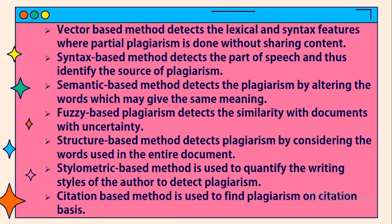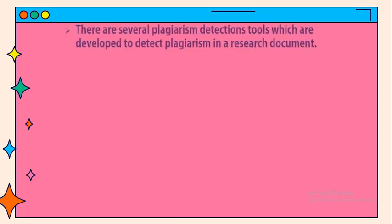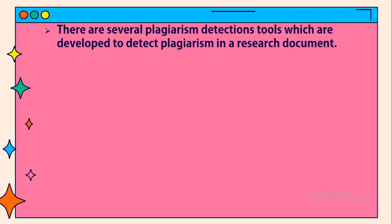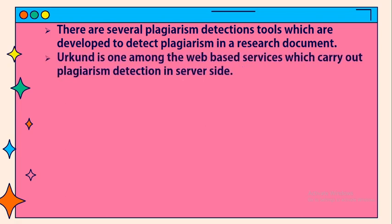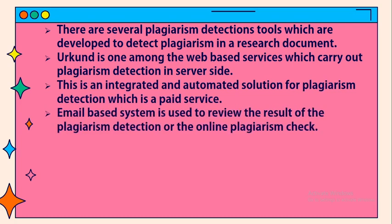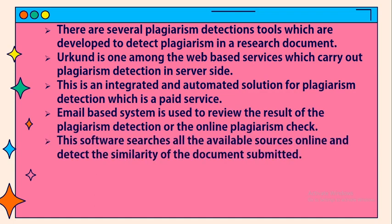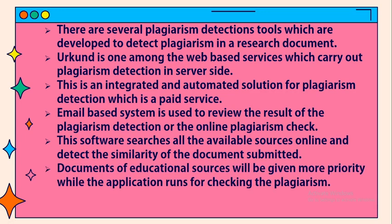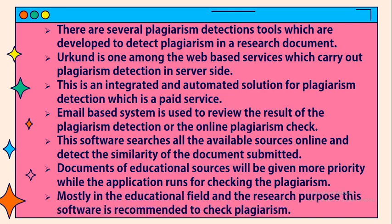Citation-based method is used to find plagiarism on a citation basis. Several plagiarism detection tools have been developed to detect plagiarism in a research document. Erkend is one web-based service which carries out plagiarism detection on the server side. It is an integrated and automated solution for plagiarism detection and is a paid service. An email-based system is used to review the results of plagiarism detection. This software searches all available sources online and detects the similarity of the submitted document, giving more priority to educational sources. It is mostly recommended in the educational and research fields.